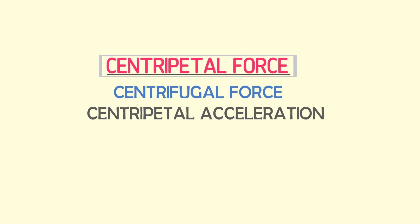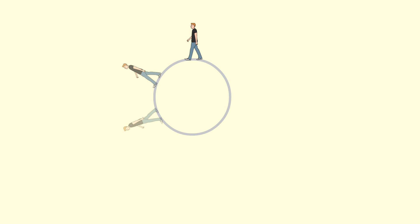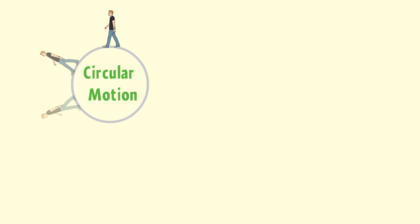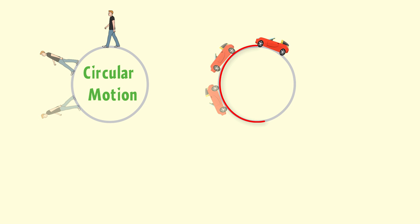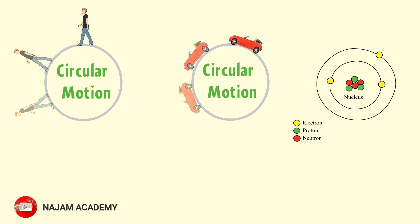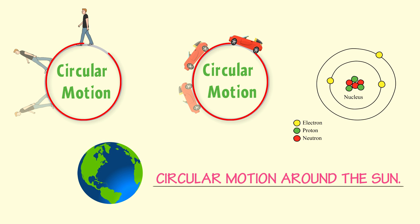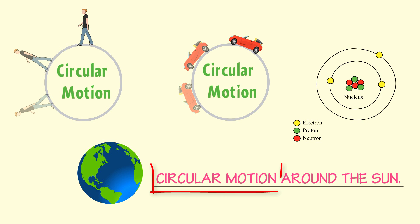What is centripetal force? Before understanding the concept of centripetal force, you must learn circular motion. For example, if a man is running around a fixed point on a circular track, then this man is in circular motion. Similarly, if a car is moving around a circular track, then the car is in circular motion. Also, the motion of electrons around the nucleus and the motion of the earth around the sun is circular motion. Simply remember that if an object or any body moves on a circular track, then the body will be in circular motion.